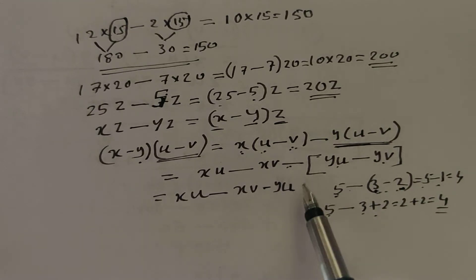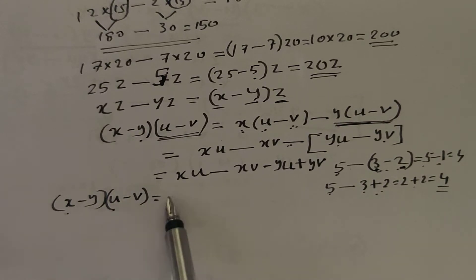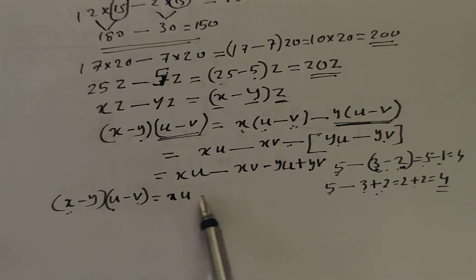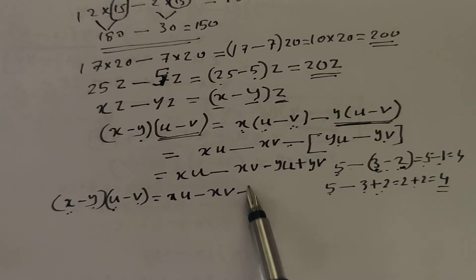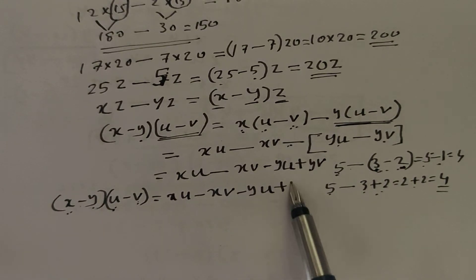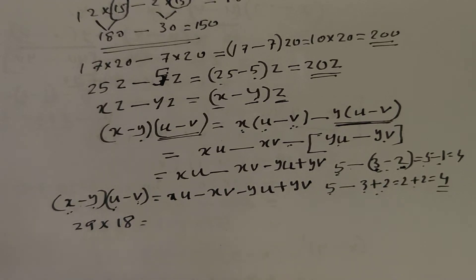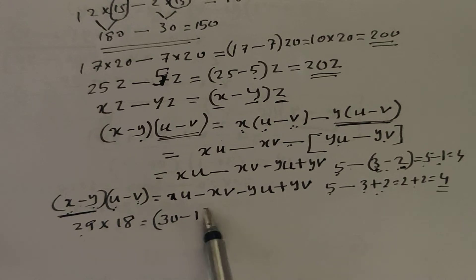So x minus y into u minus v is equal to x into u, minus x into v, minus y into u, plus y into v. An example of this: 29 into 18. The calculation is 29 into 18. 29 can be written as 30 minus 1, and 18 can be written as 20 minus 2.